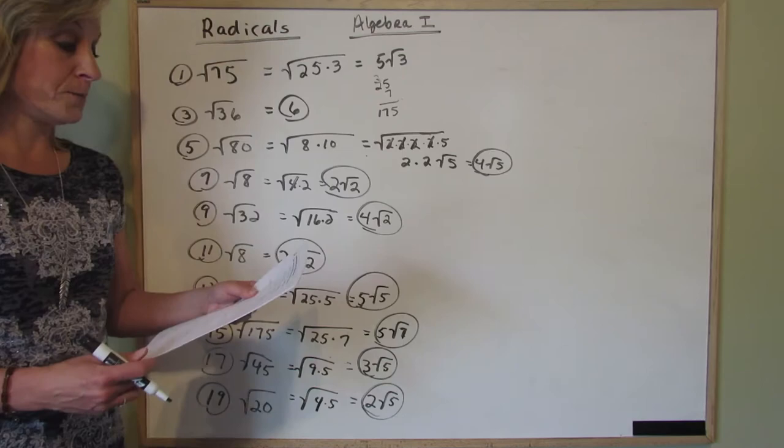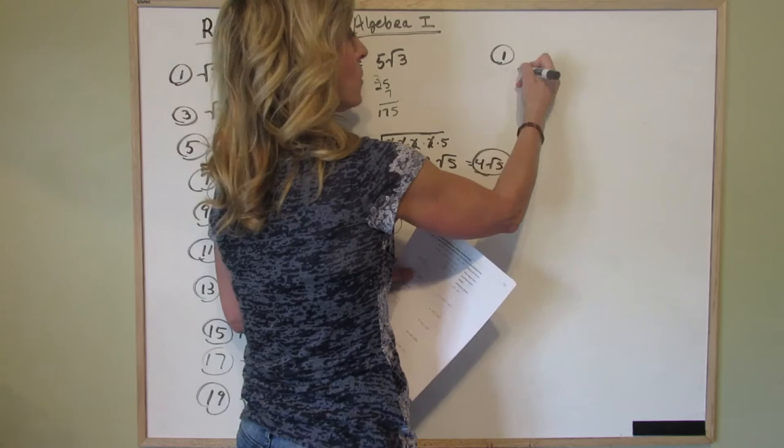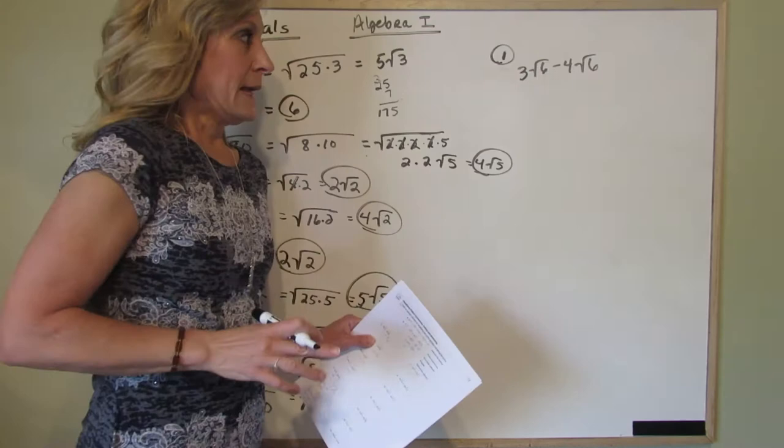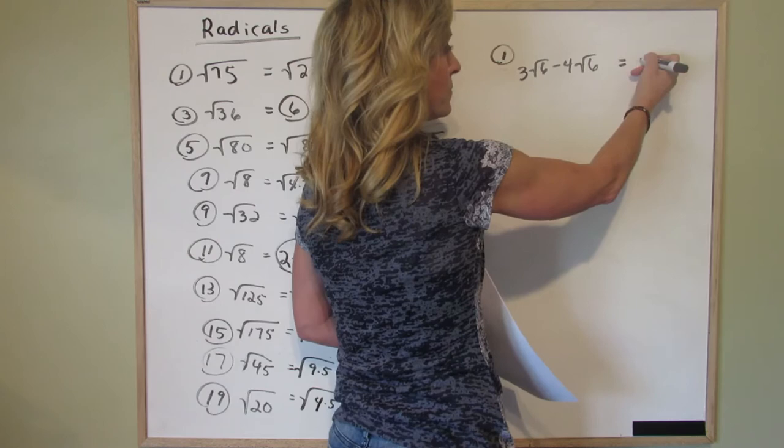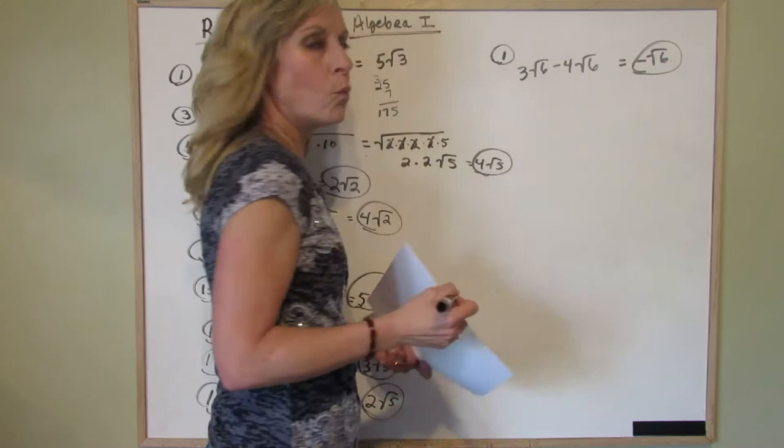So again the odds. Number 1, we have 3 square roots of 6 minus 4 square roots of 6. It's easy. Just pretend it's 3x minus 4x. So what's 3 minus 4? Negative 1. So that would be a negative x. But instead of an x we have a square root of 6. So the answer is negative square root of 6. If you put negative 1 square root of 6, it's the same thing. I won't mark it wrong.